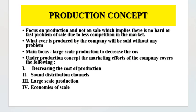सबसे पहला है production concept. इसके अंदर क्या होता है कि production के ऊपर focus किया जाता है, sale के ऊपर नहीं. Market के अंदर competition कम होने पर ज़्यादा से ज़्यादा production की जाती है ताकि economies of scale मिलें, जिससे product की cost कम हो. यहां पर logic यह होता है कि जो भी हम produce करेंगे वो सारा का सारा sale हो जाएगा क्योंकि competition नहीं है. Focus on production, not on sale — which implies there is no hard problem of sale due to less competition, and whatever is produced will be sold without any problem.